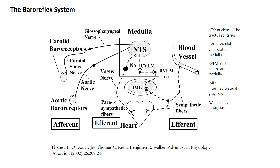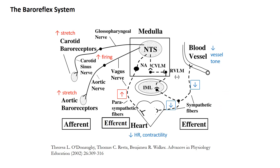How does the baroreflex work? There are sensors made up of nervous tissue in the aortic arch and in the carotid sinus. These sensors, called the afferent baroreceptors, fire when the vessels are stretched, like what happens in systole. They stop firing when the vessel is relaxing, like in diastole. So if you stretch them a lot, you get a lot of firing; if they don't stretch much, not so much firing. An increase in stretch leads to an increase in afferent firing rate.